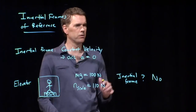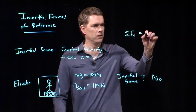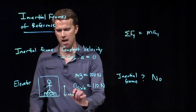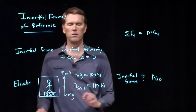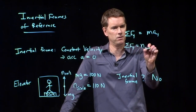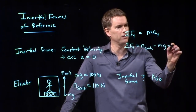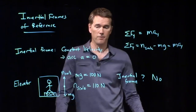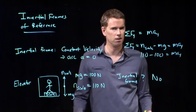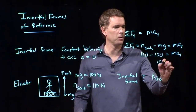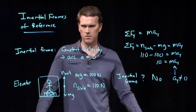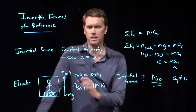Let's double check and make sure that works. We know that the sum of the forces in the y-direction is equal to the mass times the acceleration in the y-direction. The only forces acting on this person are Mg down and the normal force from the scale going up. The sum of the forces becomes N minus Mg, equal to mass times acceleration. That's 110 newtons minus 100 newtons, which equals 10. We get a positive number for a — certainly not equal to zero — and that means we are not in an inertial frame.